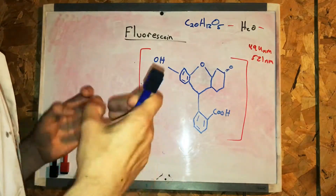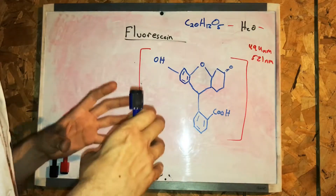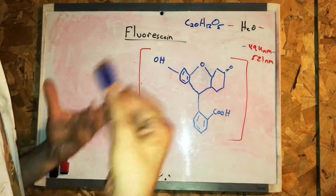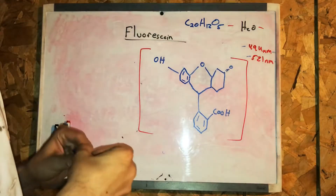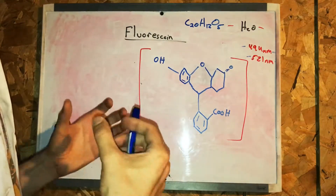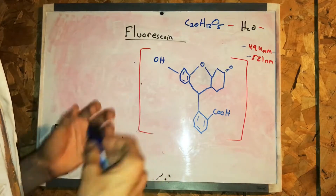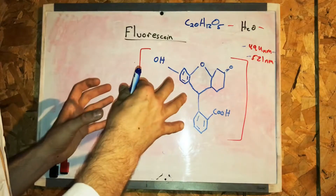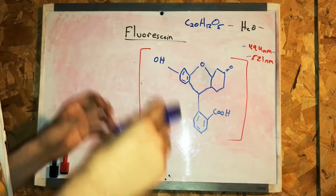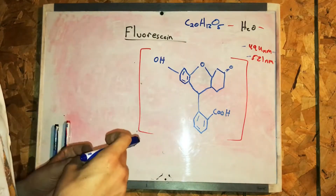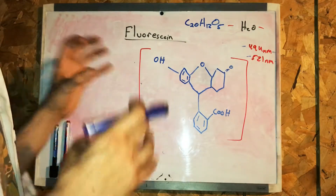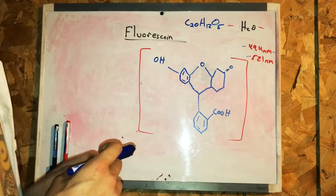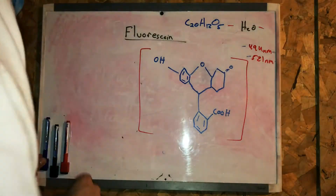The fluorescence of this molecule is very intense. The peak excitation occurs at 494 nanometers, and the peak emission at 521 nanometers. Fluorescein fluoresces in the presence of ultraviolet light. When I add the fluorescein to some water, it's going to dissolve slightly and give a yellow-green color while the ultraviolet light hits and penetrates the fluorescein. Let's head to the laboratory and let me demonstrate that.